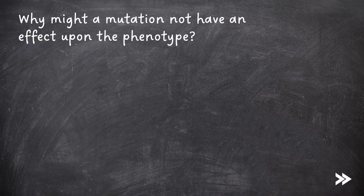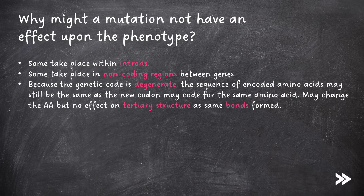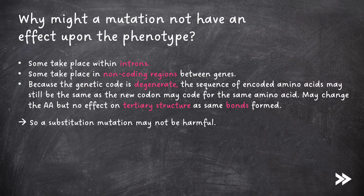Why might a mutation not have an effect upon the phenotype? Some mutations may take place within introns. Some may take place in non-coding regions between genes. Also, because the genetic code is degenerate, the sequence of encoded amino acids may still be the same, as the new codon may code for the same amino acid. Or the amino acid may be changed, but the overall tertiary structure can stay the same, as the R group of the amino acid may still form the same type of bonds with other amino acids. So a substitution mutation may not be harmful.